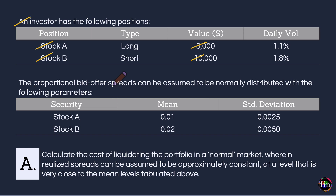The proportional bid-offer spread is defined as S = (P_ask − P_bid) / P_mid, where P_mid is the average of P_ask and P_bid. So the proportional bid-offer spread is essentially the dollar bid-offer spread divided by the mid price. We are given that this S is normally distributed with respective parameters for stock A and stock B.